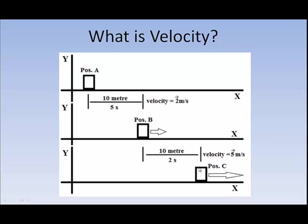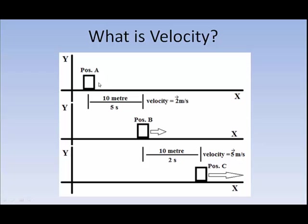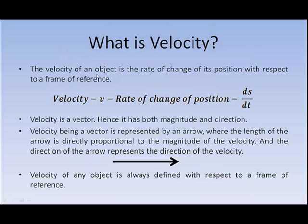Again, it moved from position B to position C, using the same frame of reference to measure the position of this box. That is why we can definitely say that the velocity is 2 meters per second, because the displacement has taken place within this frame of reference. So to repeat: the velocity of an object is the rate of change of its position with respect to a frame of reference.